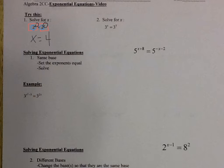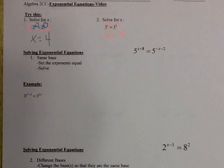So let's take a look at number 2 on the right side. 3 to the x is equal to 3 to the 5th. They both have a base of 3, so they have to be the same in order for them to be equal. If this is x and this is 5, then x has to be equal to 5. Makes sense, right?